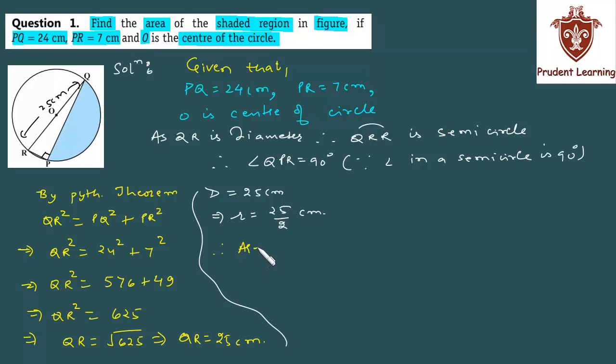Therefore, we have area of semicircle as, the formula you know is half pi r squared, or pi r squared by 2, whichever you prefer. Let's substitute the values. For pi, you can take 22 by 7. The radius you just found is 25 by 2. Square it.